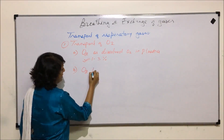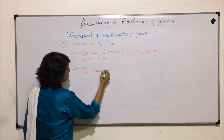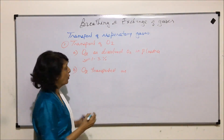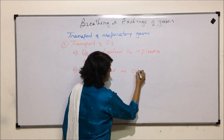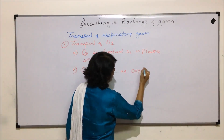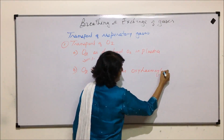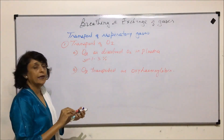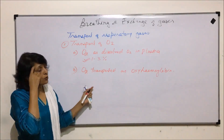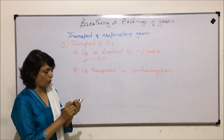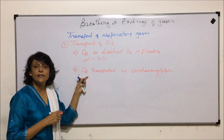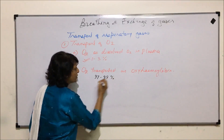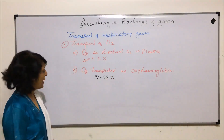The major part of oxygen is transported as a complex with hemoglobin. Before we take up exactly which process helps, we need to understand a few things about hemoglobin. This is the major part — 97 to 99% of oxygen is transported in this manner.